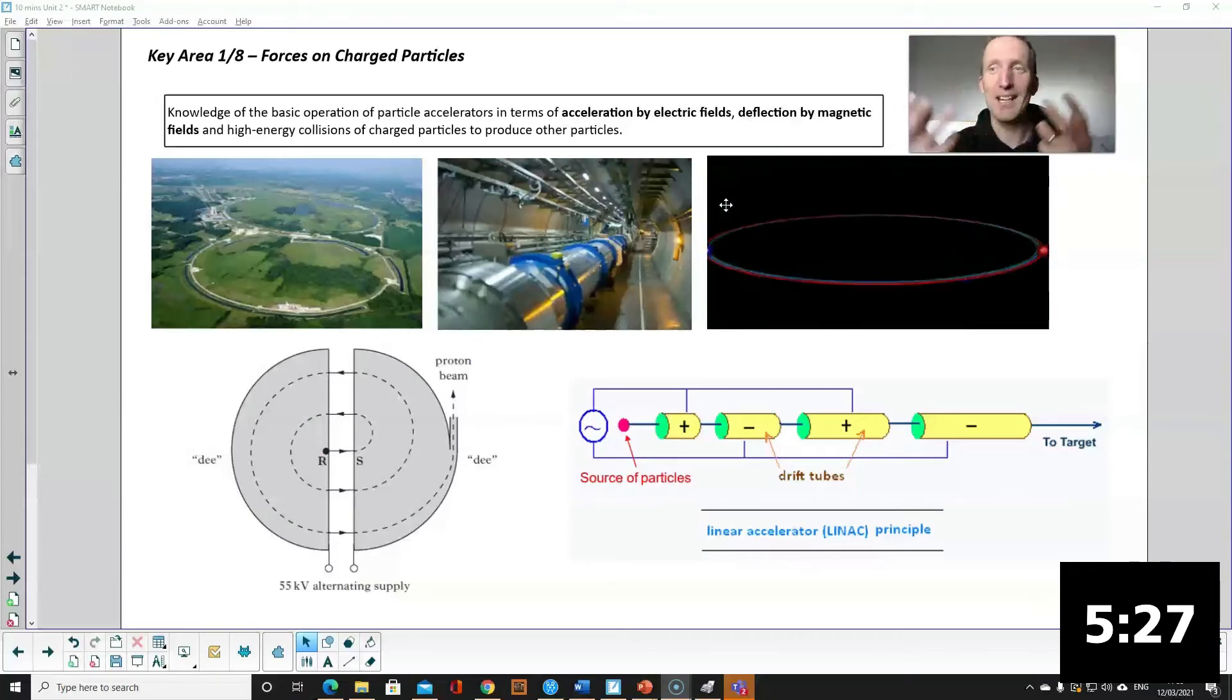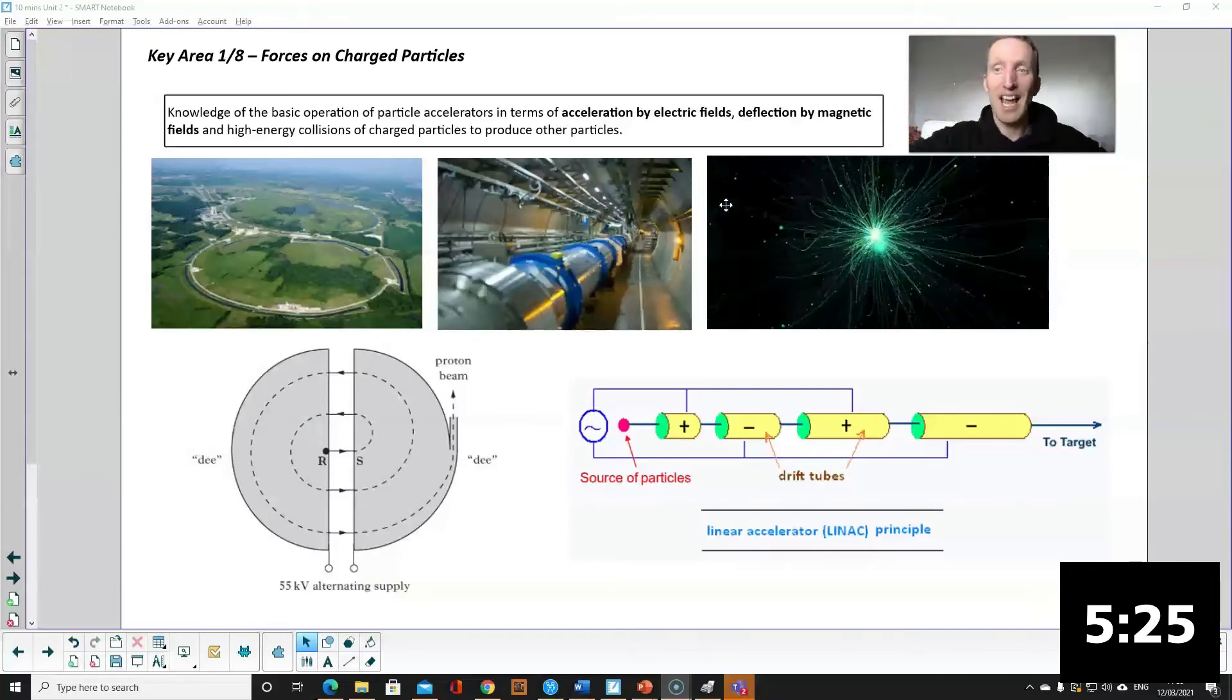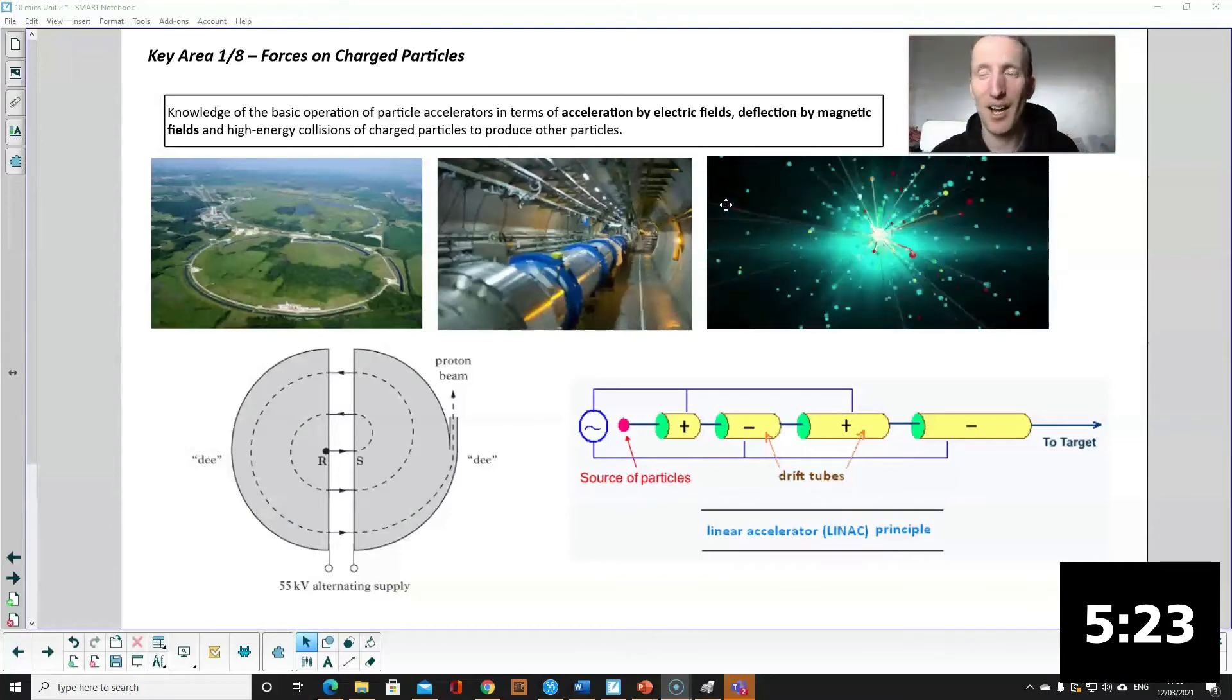In a particle accelerator particles are accelerated with electric fields and then deflected using magnetic fields. The whole point of them is to collide particles at high velocities and then look at the particles that are created as a result.